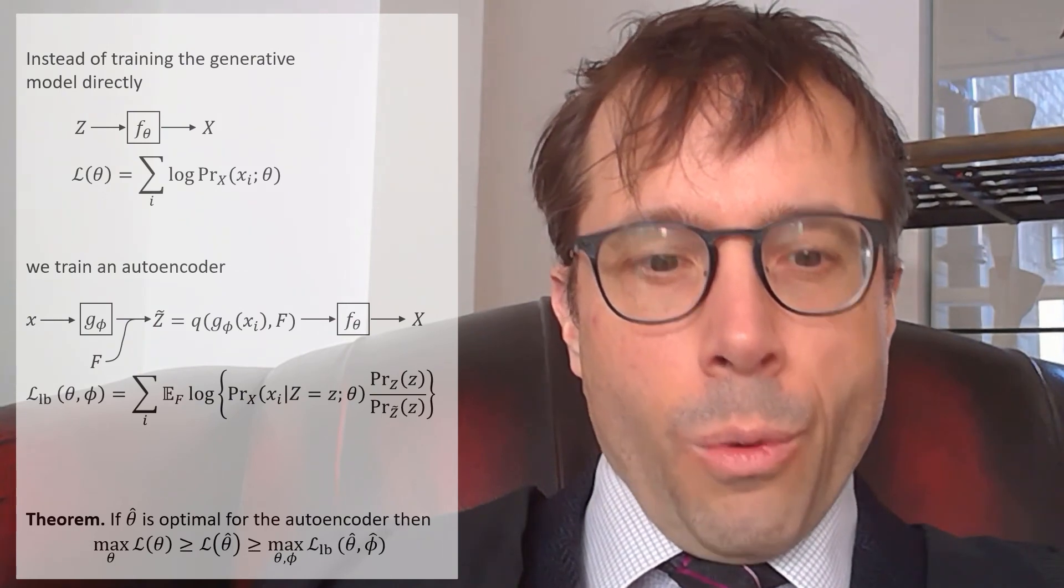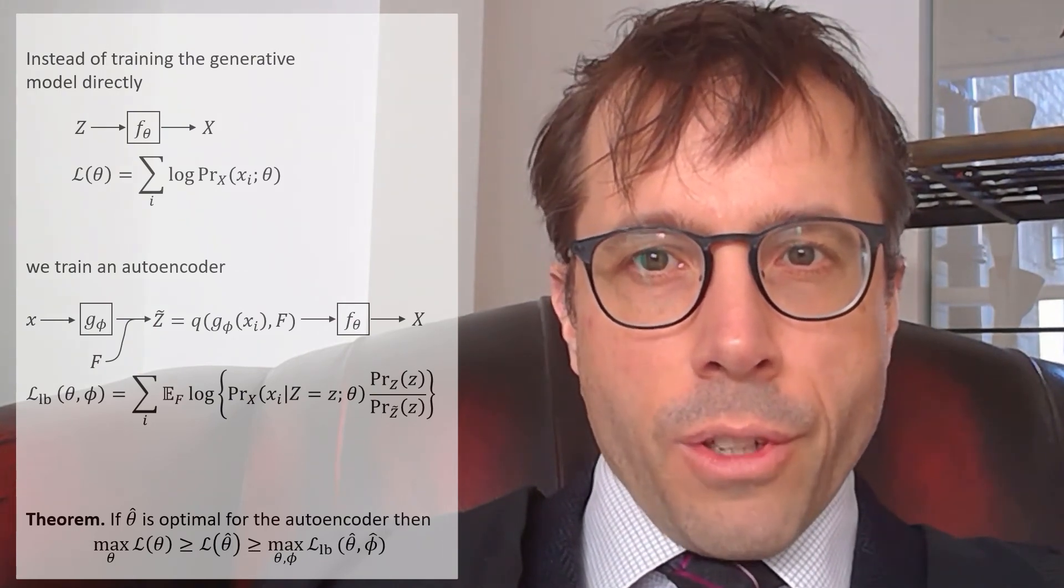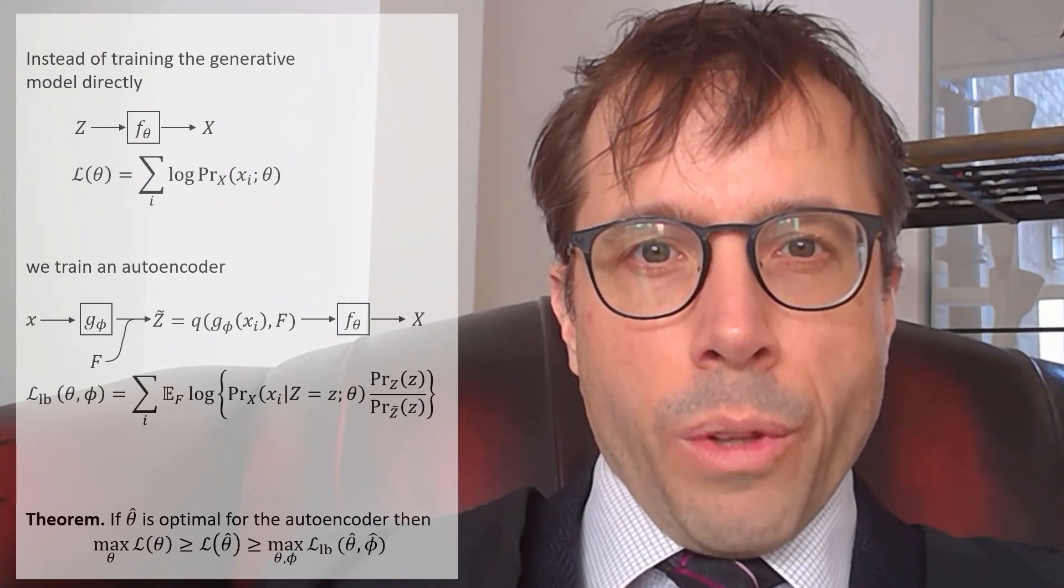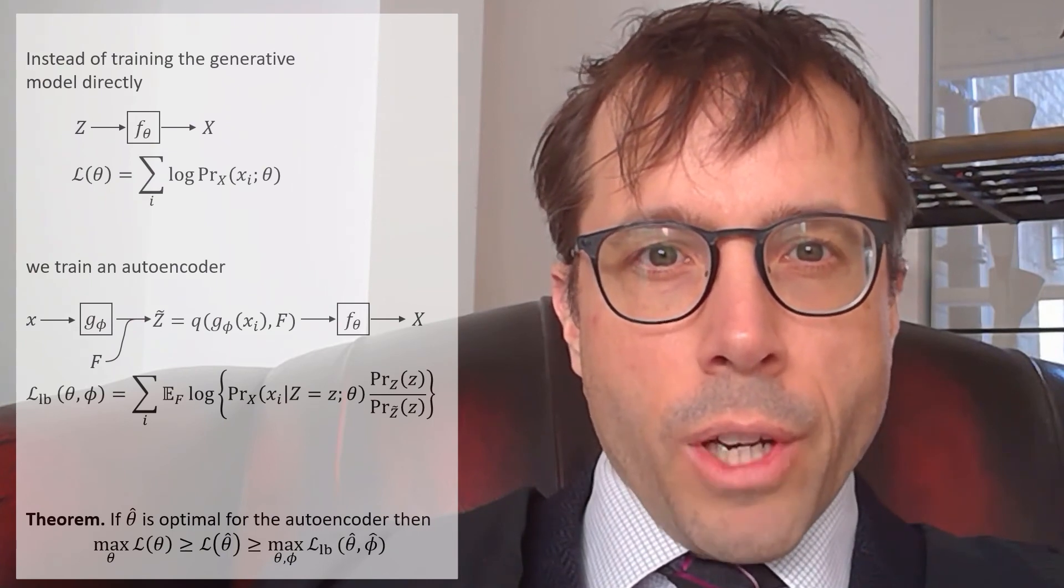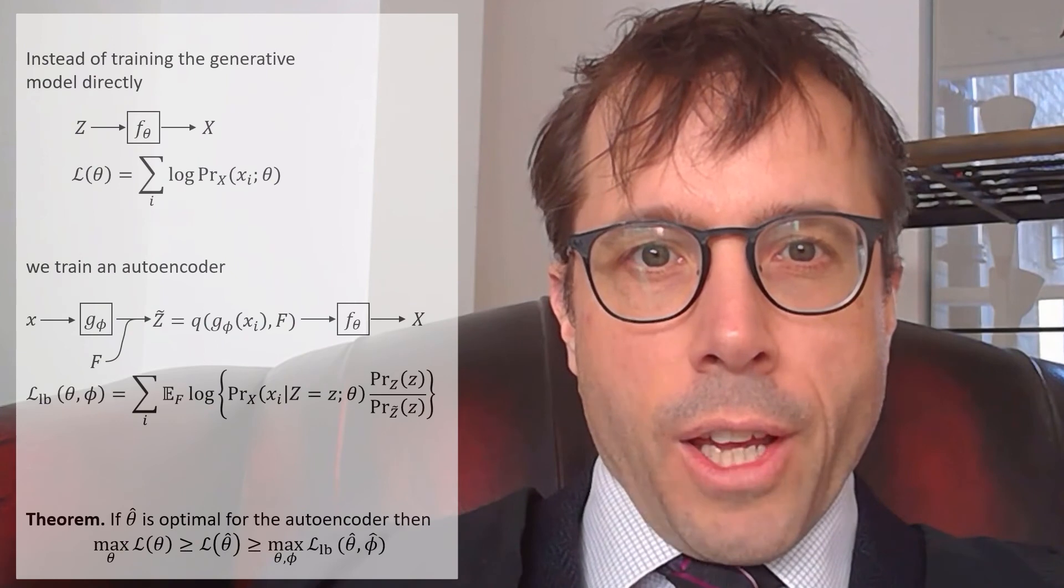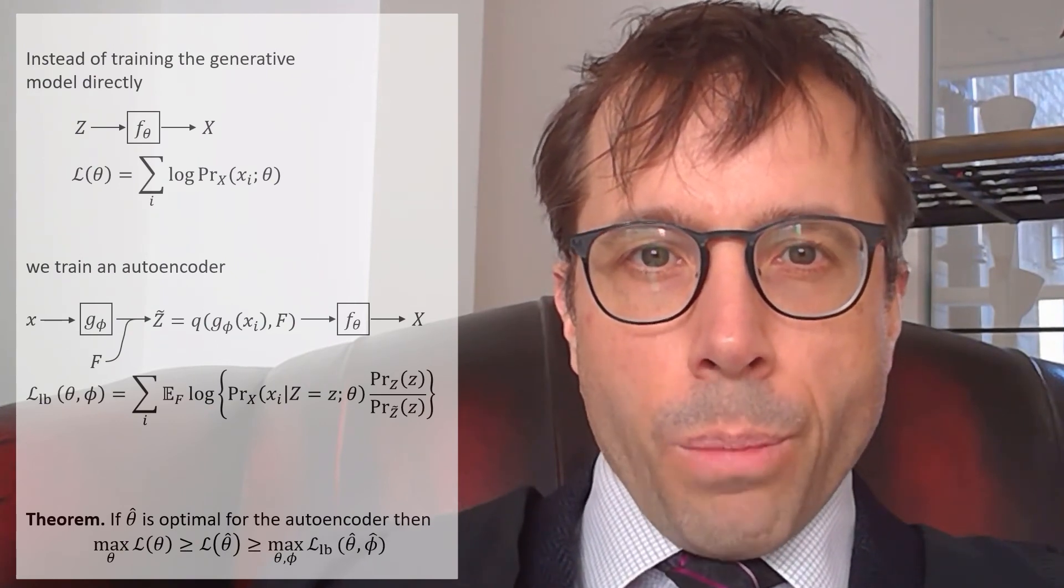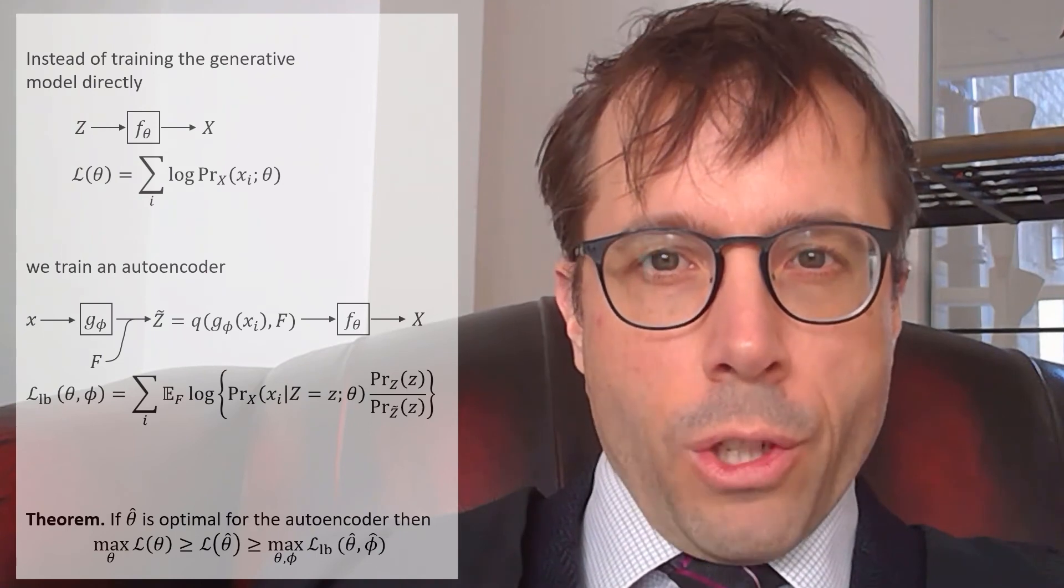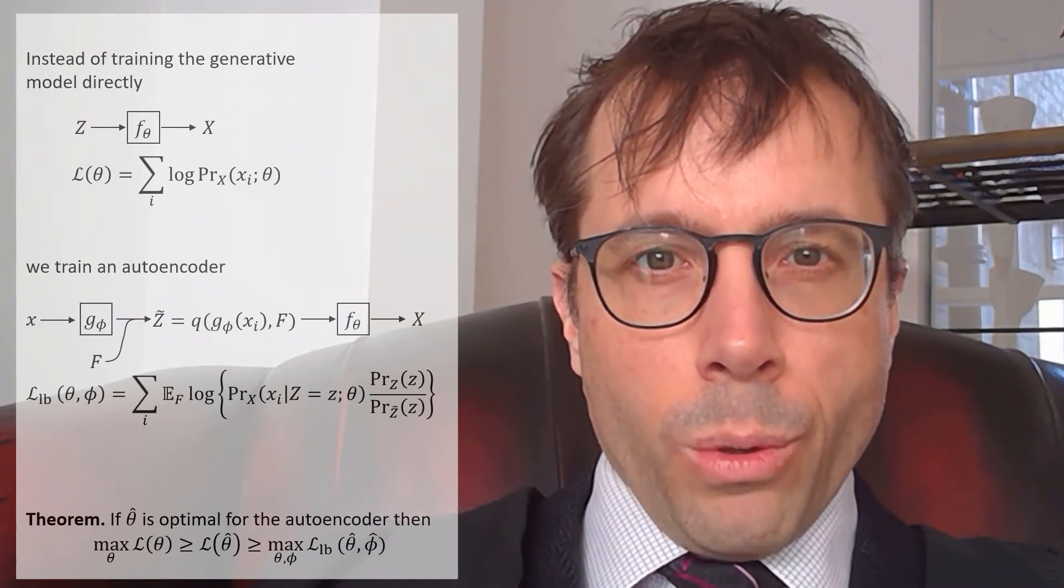And there's the theorem which tells us that what we find gives a lower bound on the log likelihood of the data set for the generative model with parameter θ̂. It may not be the absolute best θ we can find for the generator, but at least we can find it and it gives us a lower bound on L(θ̂). This is a good point to step back and look at what we've actually got here. There's something really interesting about the role of the encoder. Let me explain.